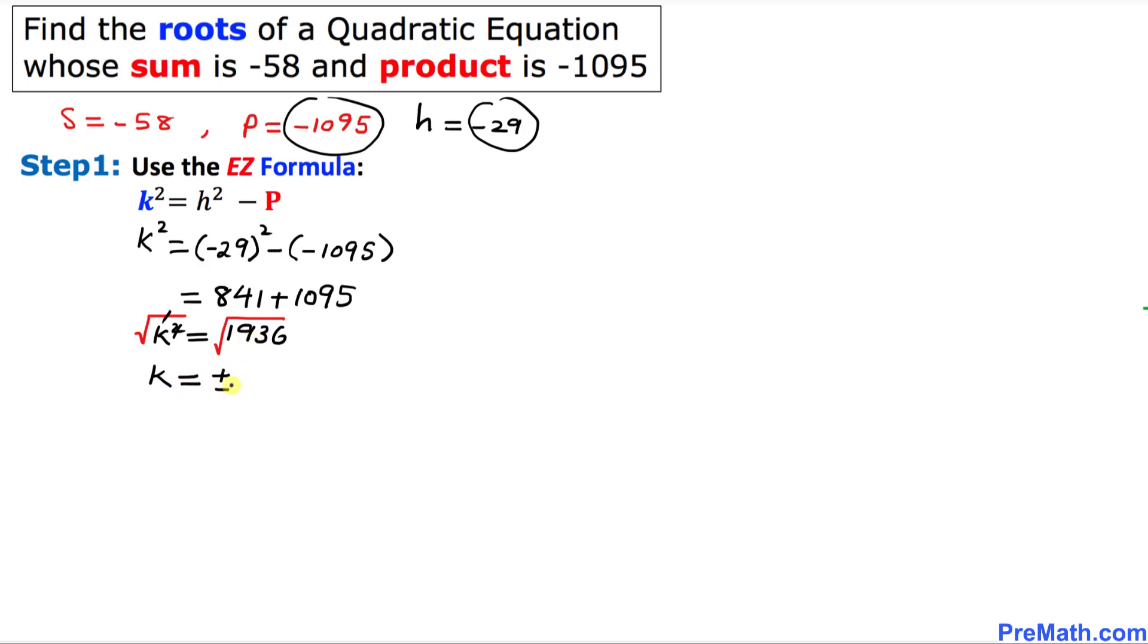So thus our K value turns out to be positive or negative 44.